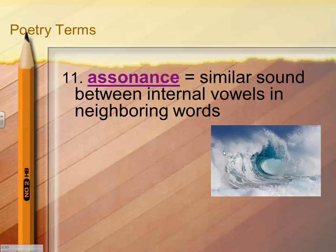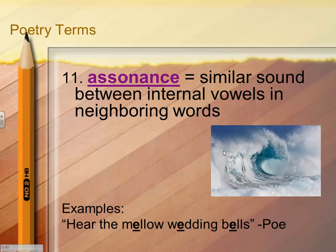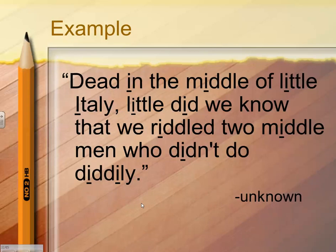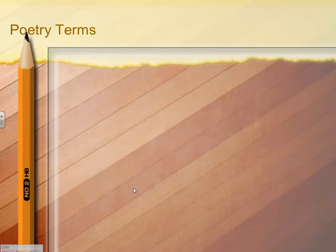The next poetry term is assonance, which is a similar sound between internal vowels in neighboring words. For example, hear the mellow wedding bells — see that vowel E repeated throughout. The crumbling thunder of seas. Dead in the middle of little Italy, little did we know that we riddled two middlemen who didn't do didly — that I sound throughout is an example of assonance.